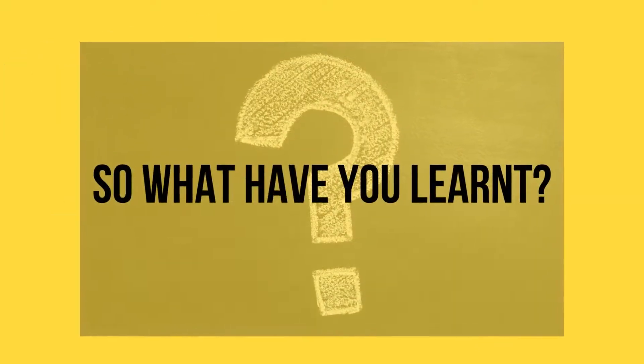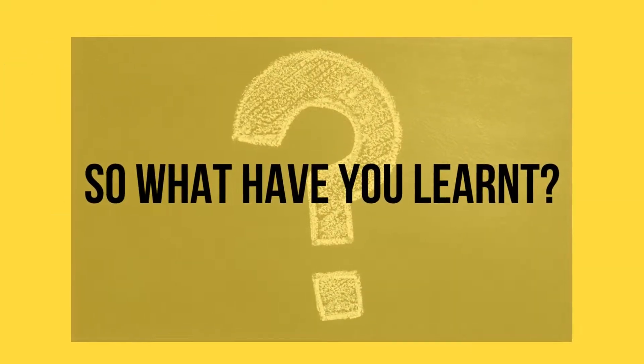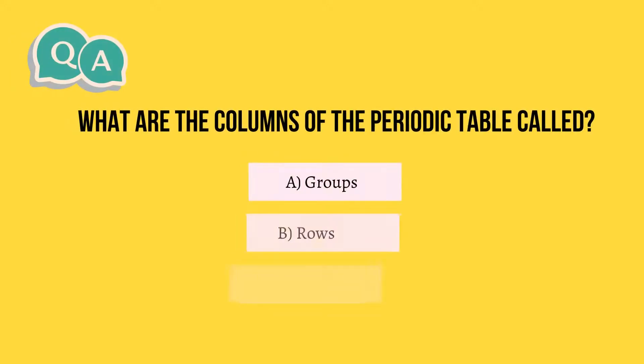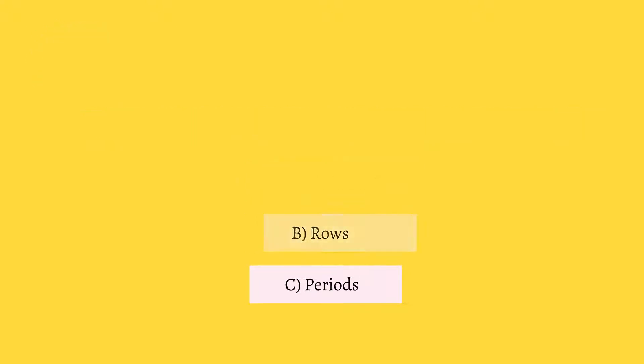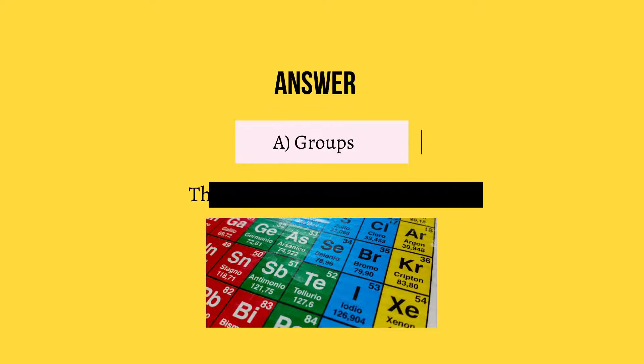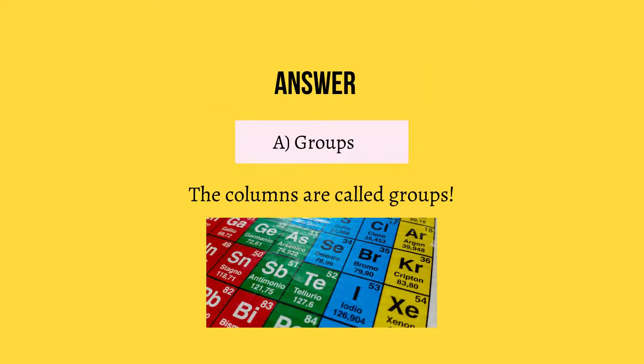So what have you learnt? Let's try a quiz. Question 1: What are the columns of the periodic table called? A. Groups, B. Rows, C. Periods. The answer is A. Groups — the columns are called groups.